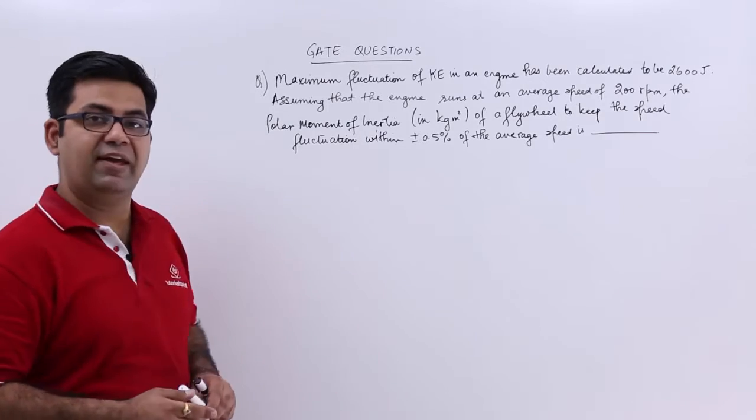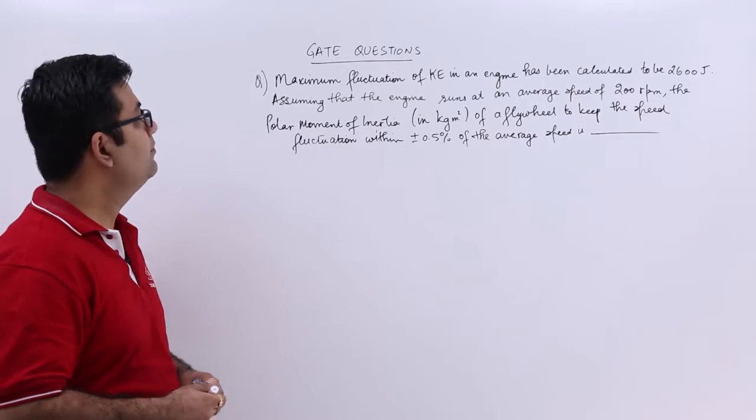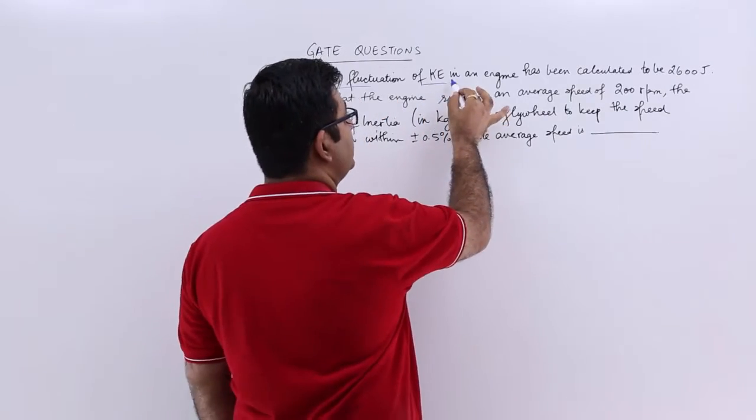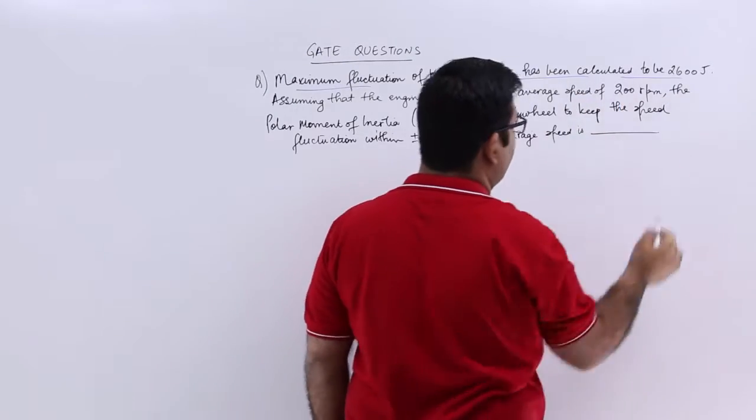Now let's look at another question on flywheel, this is question number 11. It says maximum fluctuation of kinetic energy in an engine has been found out to be 2600 joules.